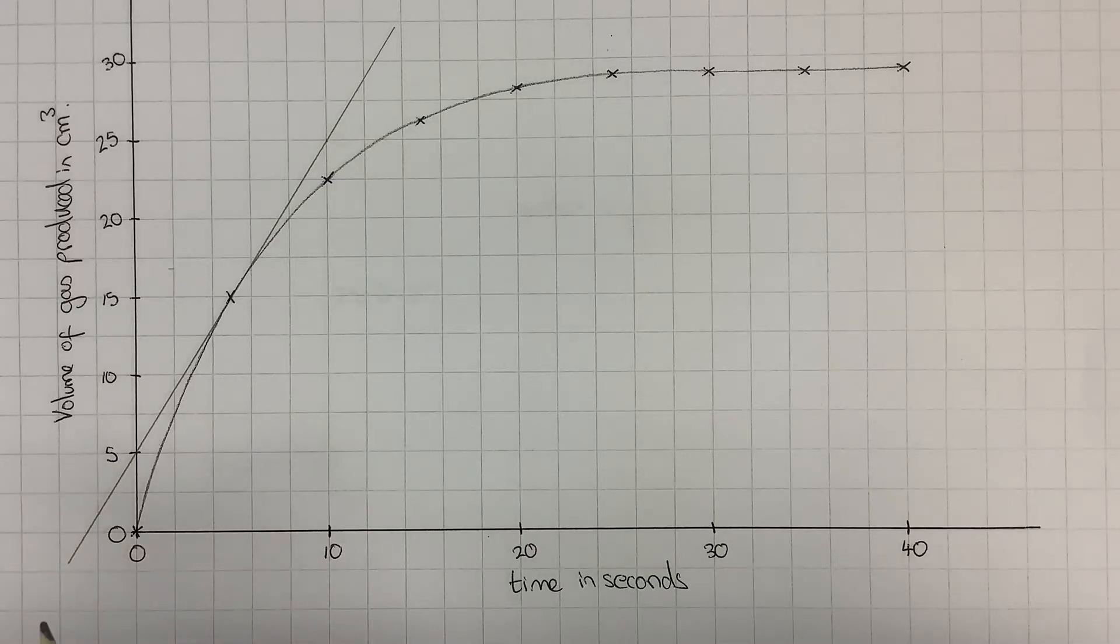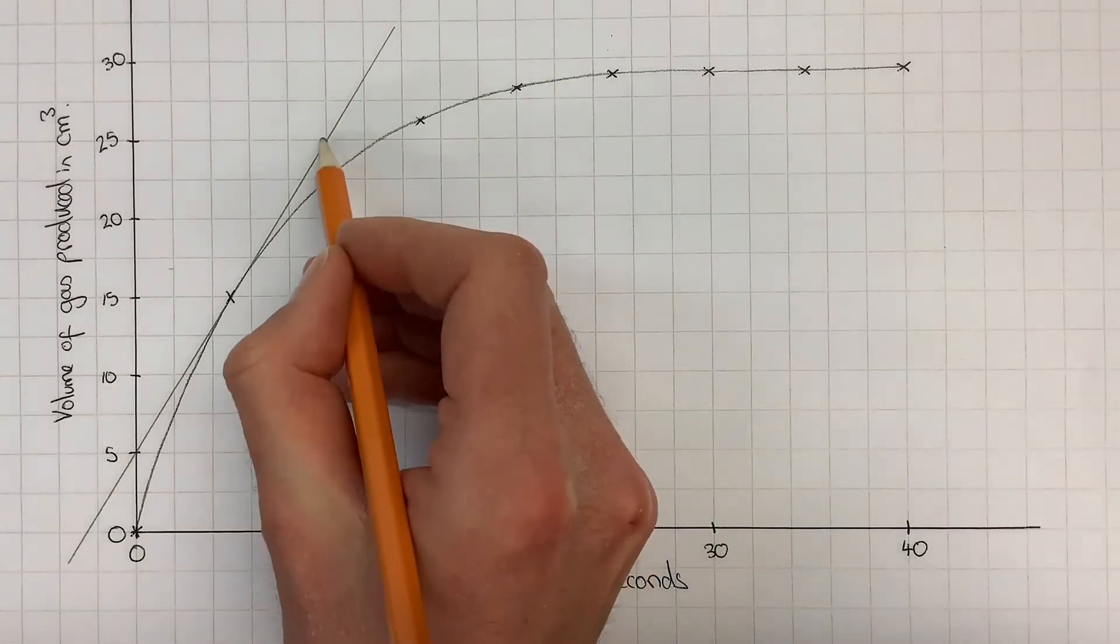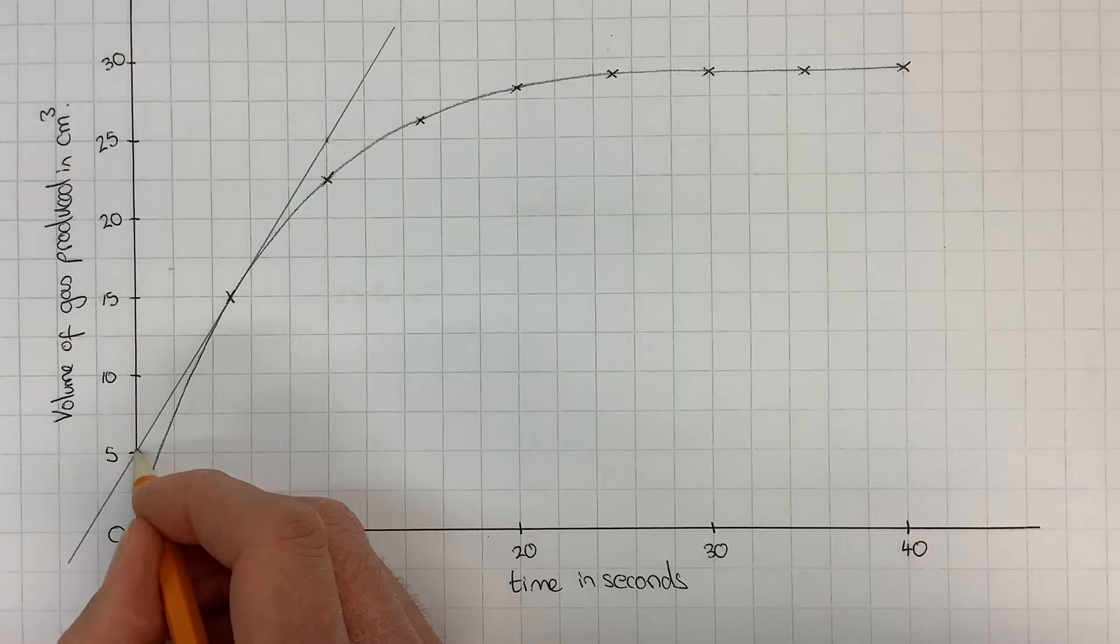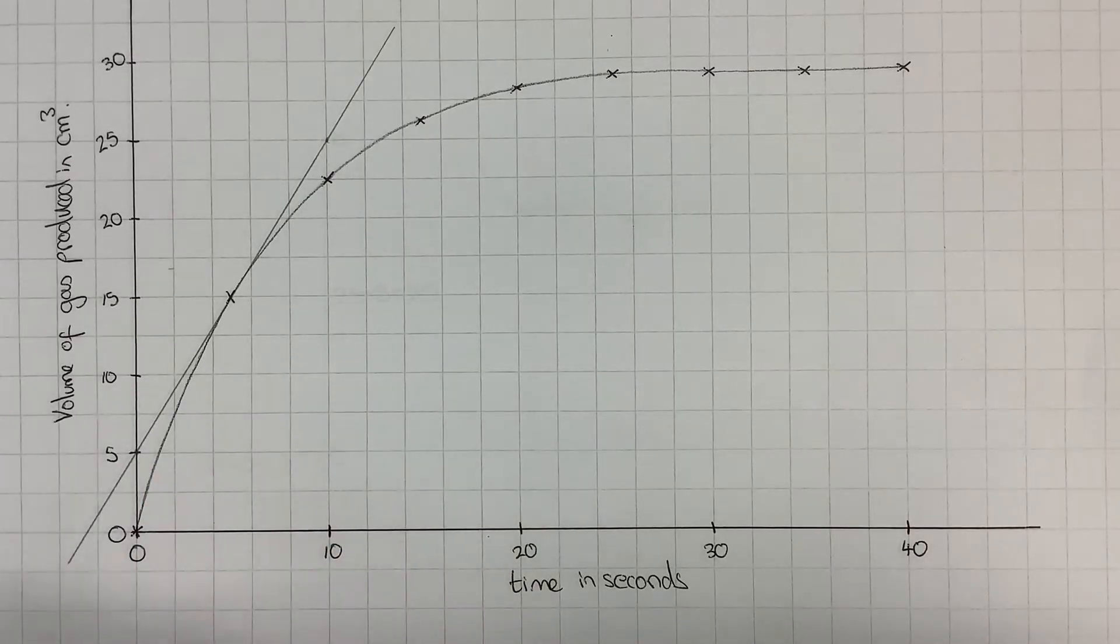It's useful to draw a triangle. If I've got nice points, for example here and here on the line, which are going to be easy to read, I can draw my triangle between those points.